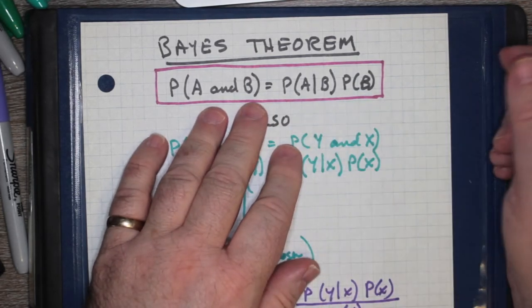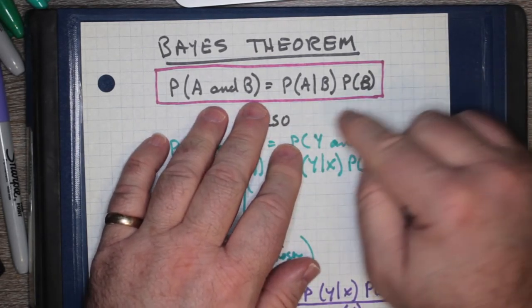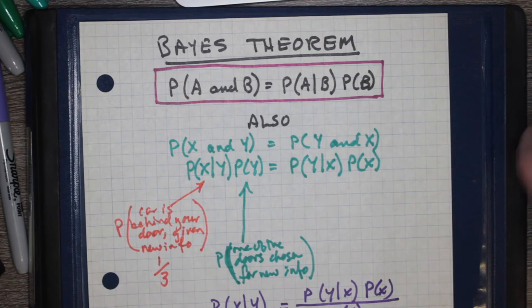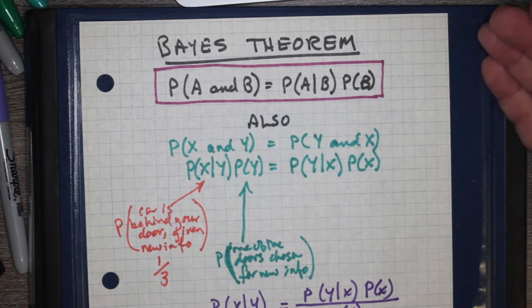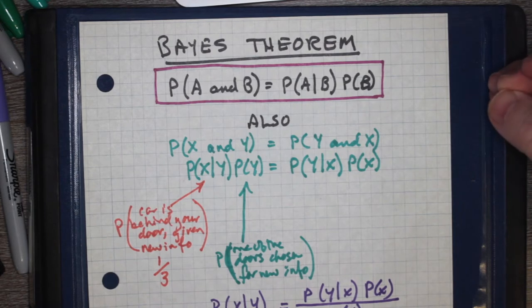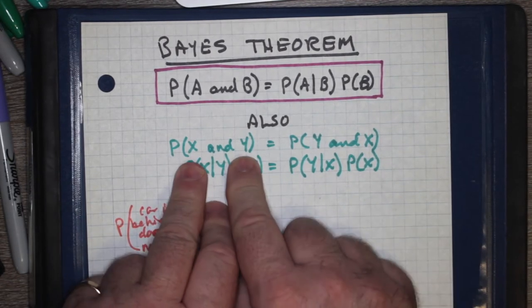So basically both A and B are probabilistic events. They both have probabilities attached to them, but one is linked to the other, one kind of depends on the other, and that's Bayes theorem. That's also the product rule for dependent events.